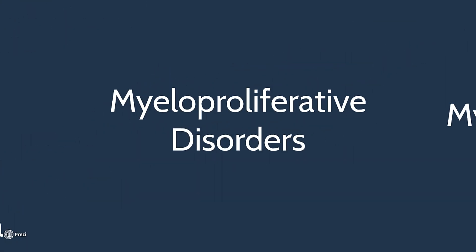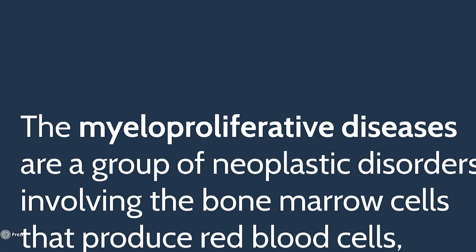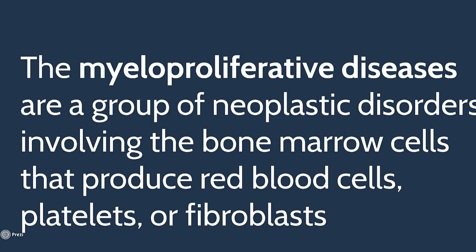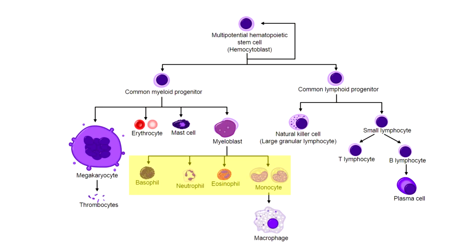The myeloproliferative diseases are a group of neoplastic disorders involving the bone marrow cells that produce red blood cells, platelets, or fibroblasts. CML or chronic myeloid leukaemia is the overproduction of mature white blood cells in the myeloid line. The myeloproliferative diseases are very similar, except it's all the other cells that might be produced — which aren't white cells.